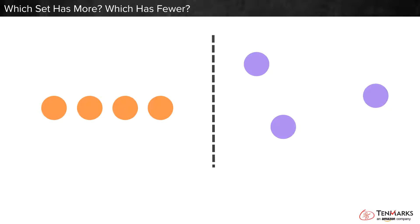First, count the dots to see how many are in each group. This group has one, two, three, four, four dots.